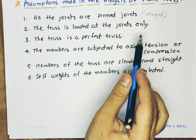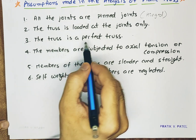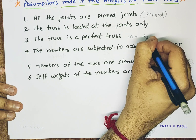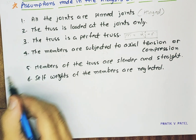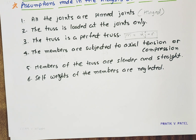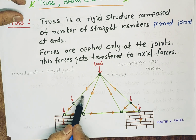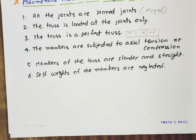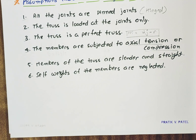The third assumption is the truss is a perfect truss. When we are finding the stresses in any member of the truss, we assume it to be perfect — that is, M = 2j − R is satisfied. The fourth assumption is members are subjected to axial tension or compression only. The stresses are always axial, whether compressive or tensile. There are no transverse loads acting, and no shear force, bending moment, or any transverse reactions are developed — only axial tension and compression.